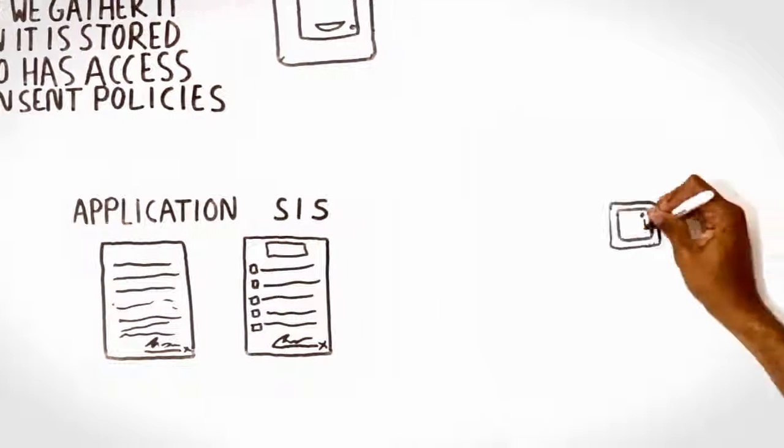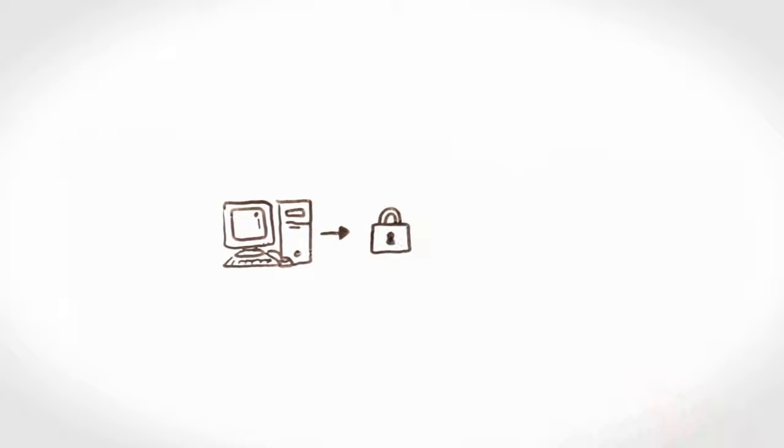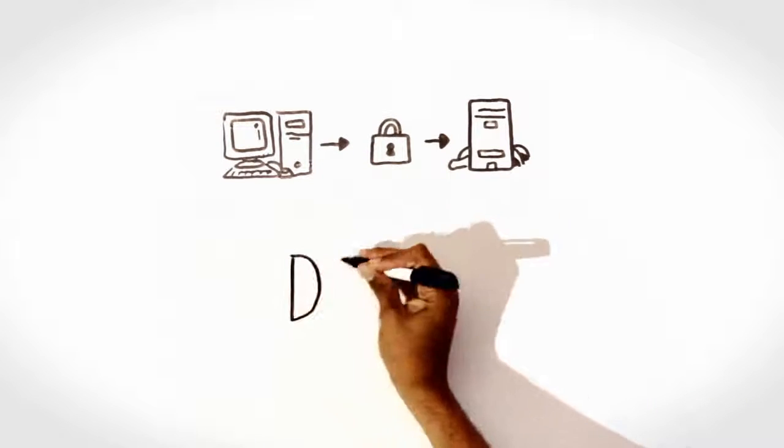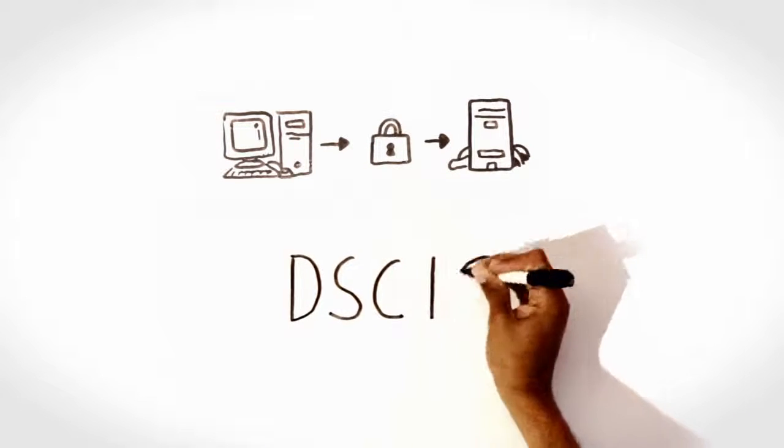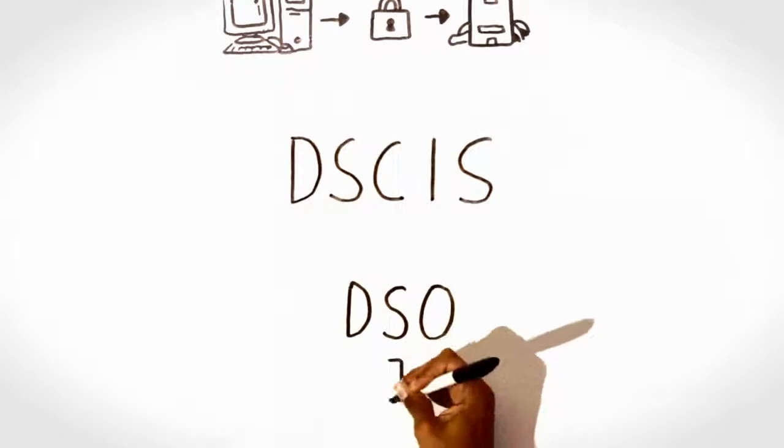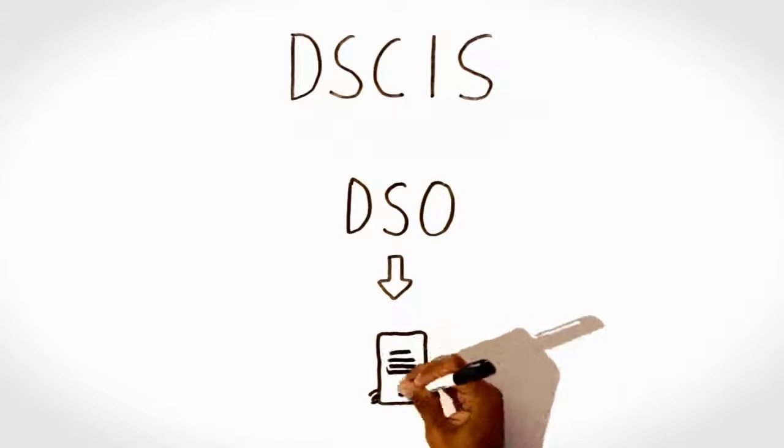All assessment and eligibility related documents are securely stored within an information system called DSCIS, the Developmental Services Consolidated Information System. Only DSO staff have access to this system. The system allows us to efficiently manage registry and planning information.